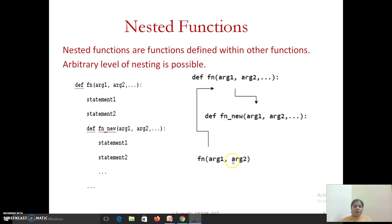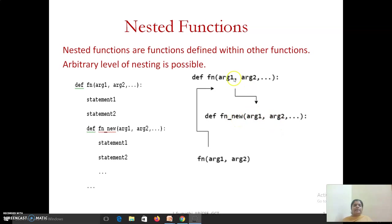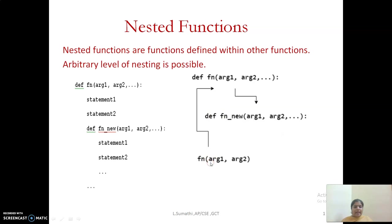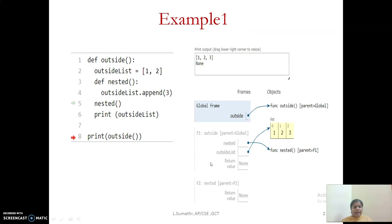If I am passing arguments to the outside function, either they can be explicitly passed as arguments to the inner function. Even if you don't pass them, the inner function can access the arguments and variables of your outside function. We can explain this with the help of an example.